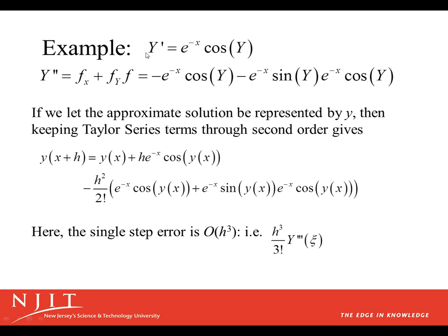Here's an example. Suppose Y' is equal to e^(-x)cos(Y). And we don't even bother with the initial condition here. We just want to demonstrate how it gets messy very quickly. So Y'' is equal to Fₓ plus Fᵧ times F. And we plug that in. Fₓ is -e^(-x)cos(Y). Fᵧ is e^(-x) times -sin(Y). And F is e^(-x)cos(Y). So Y'' is a long expression. Y''' is much more complicated.